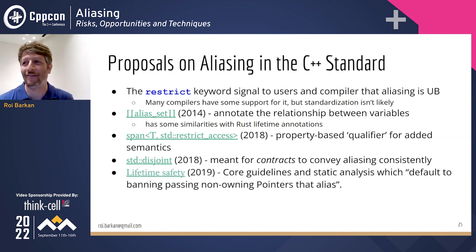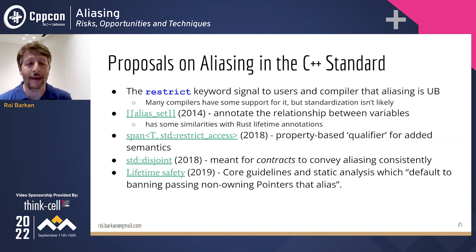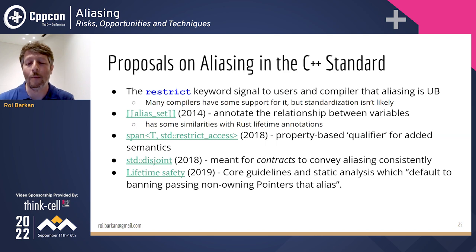A 2019 proposal by Herb Sutter on lifetime safety tries to adopt core guidelines and static analysis so that code adhering to those guidelines would be checked by static analyzers alerting on potential aliasing cases. If your code passes without warnings, non-owning pointers cannot alias, and compilers could potentially use that information to optimize.